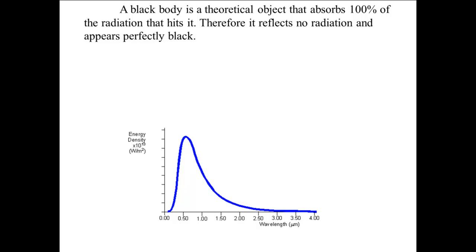Black bodies, or objects similar to them, are actually fairly common. The filament in an ordinary light bulb is a black body. Iron, when heated in a fire or in the element on your electric stove, is a black body.